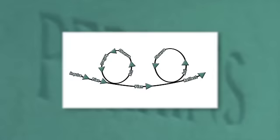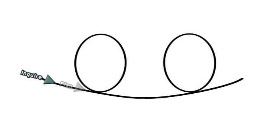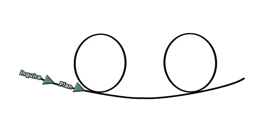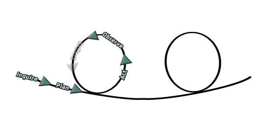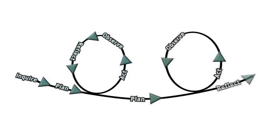So if something doesn't work, the study isn't over — you get to try again. An animated graphic illustrates the recursive nature of action research cycles, starting with the initial inquiry, moving to the planning stage, progressing to acting on that plan, and then observing or reflecting on the results. Those reflections then lead to a new plan and a new cycle of action, observation, and reflection.